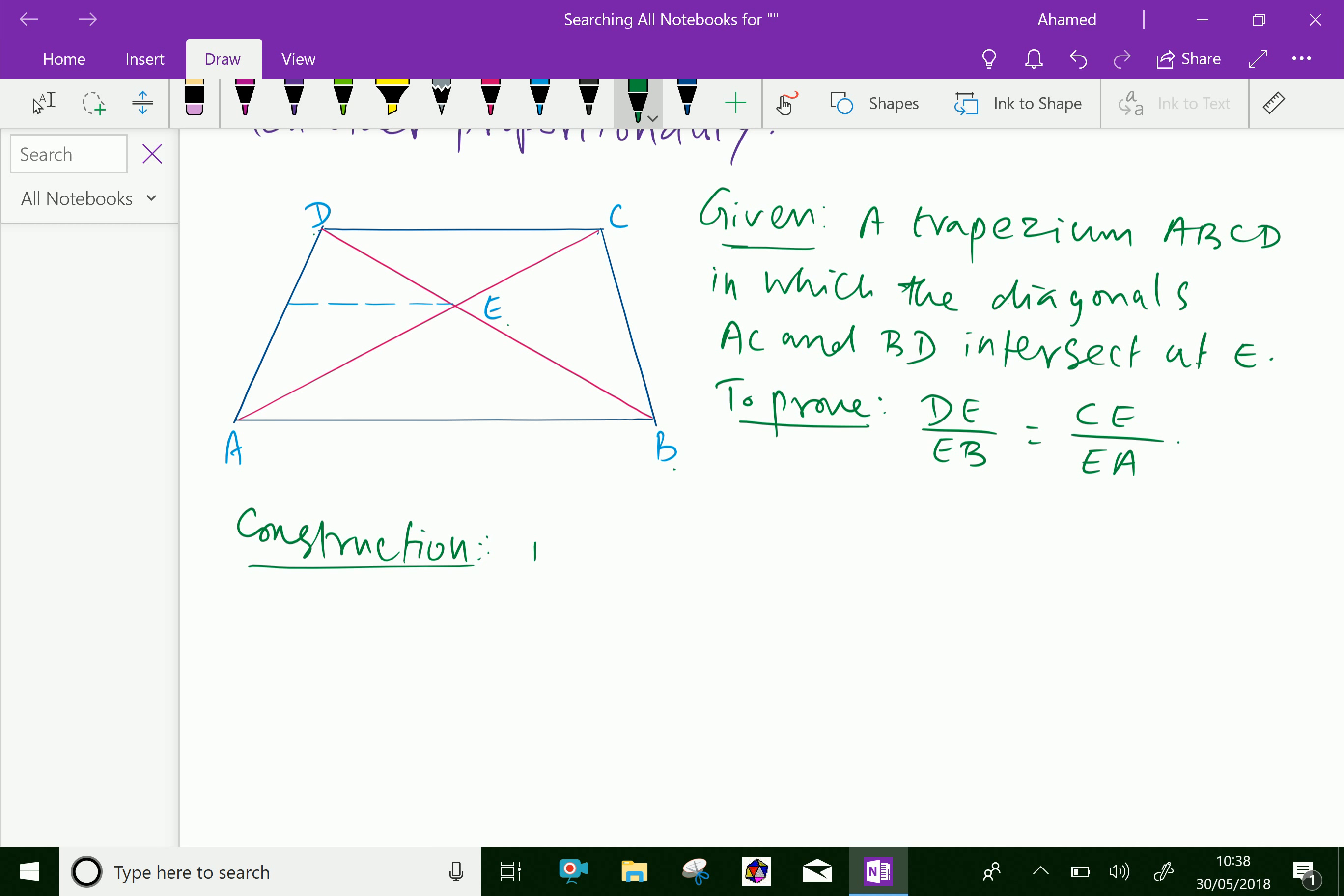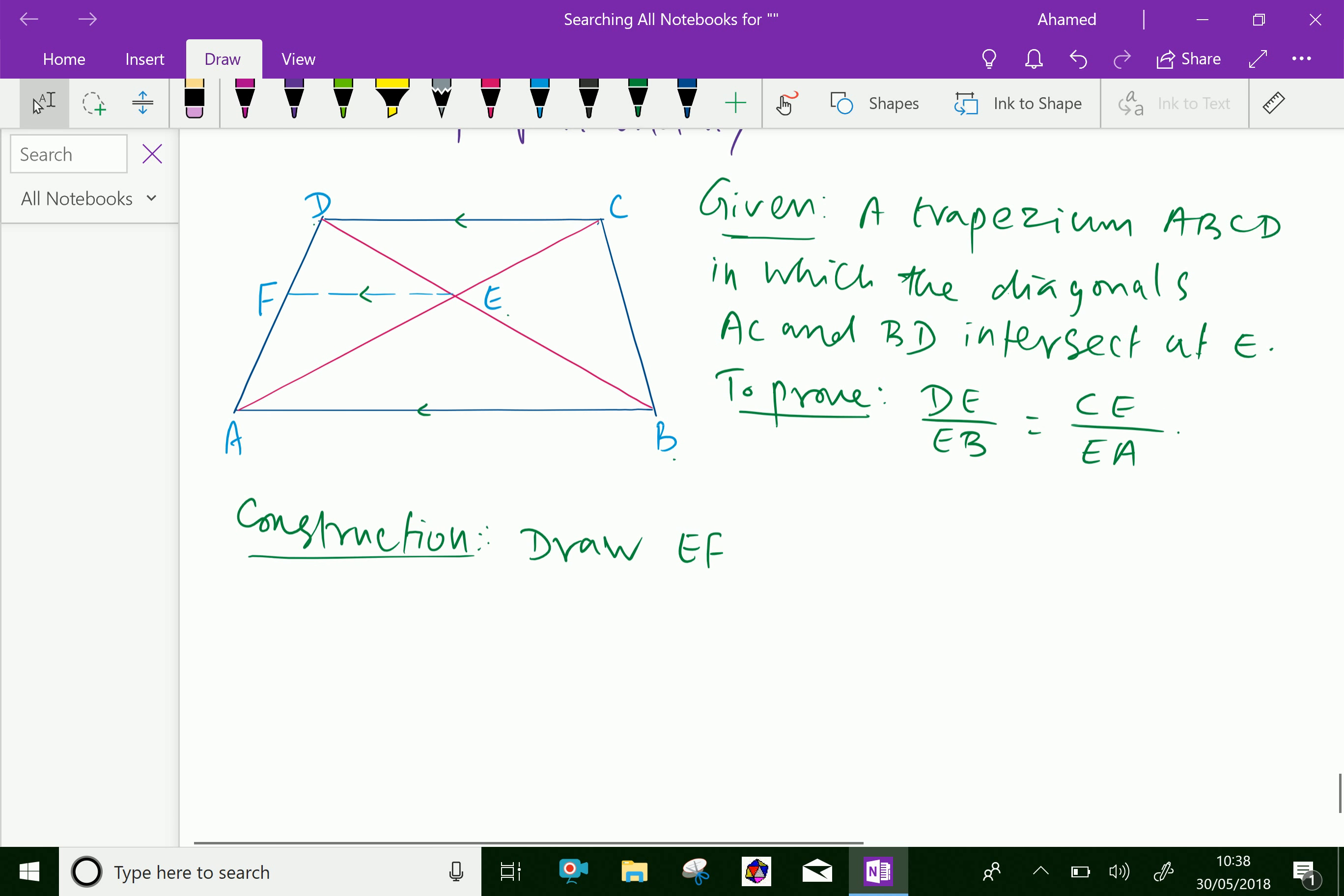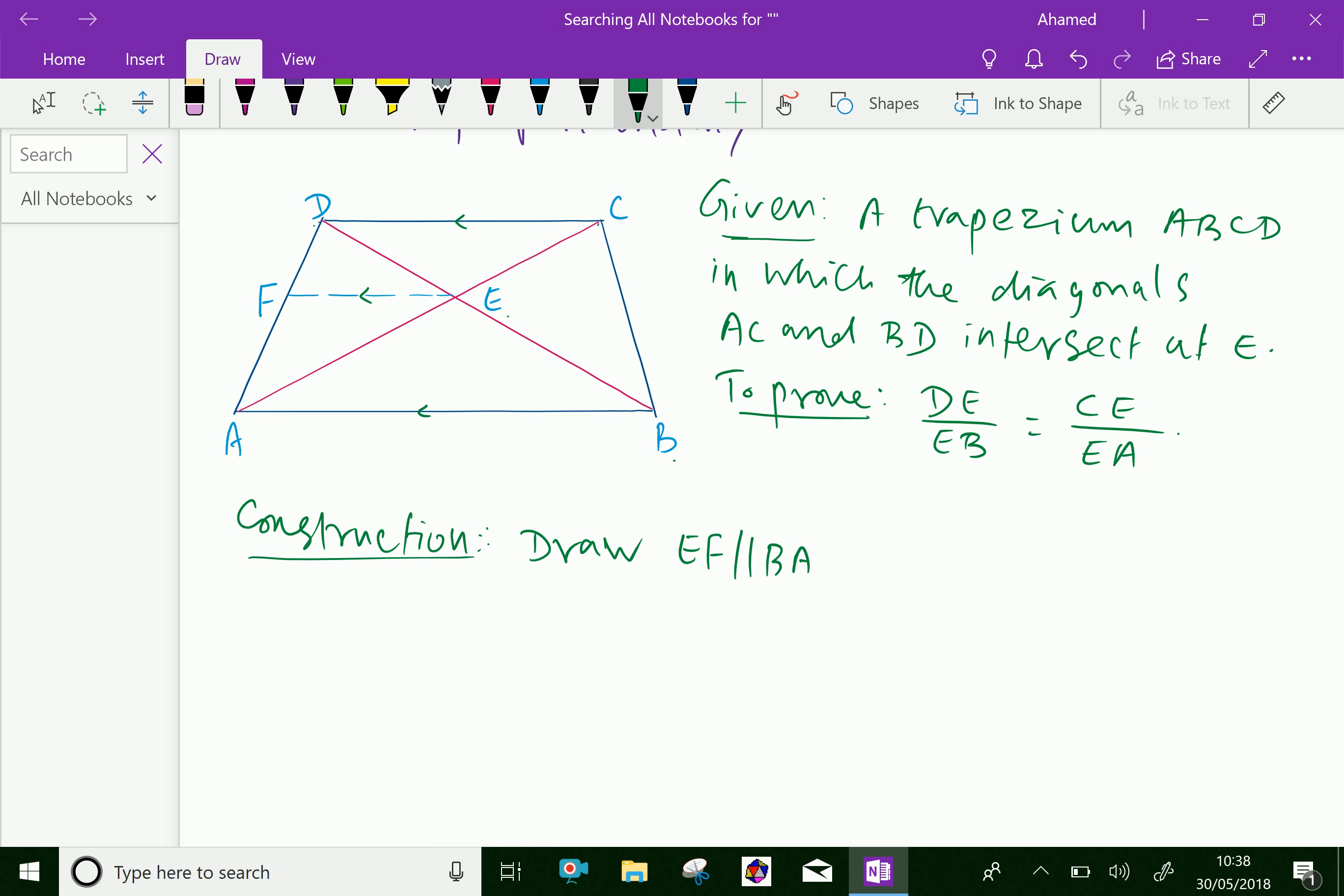Construction: Draw EF parallel to BA as well as parallel to CD, meeting AD at F.